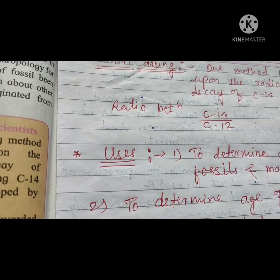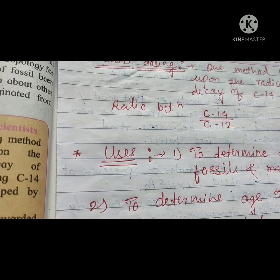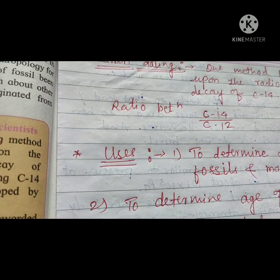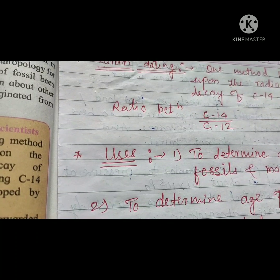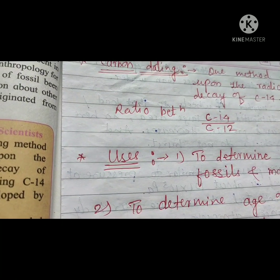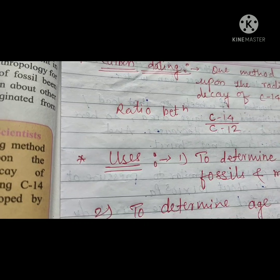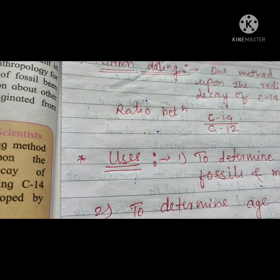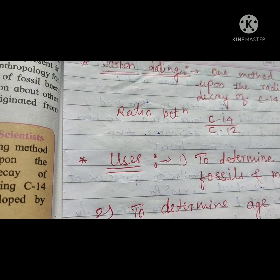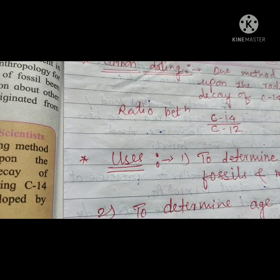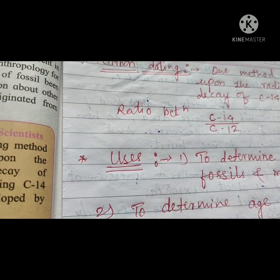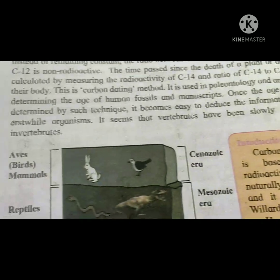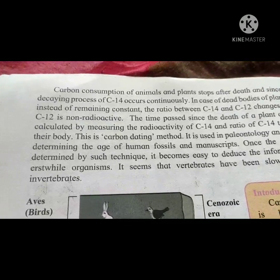The time passed since the death of a plant or animal can be calculated by measuring the radioactivity of carbon-14 and the ratio between carbon-14 and carbon-12 present in their body. This method is the carbon dating method. It is used in paleontology and anthropology.